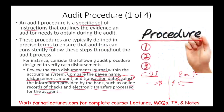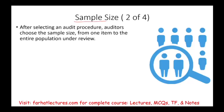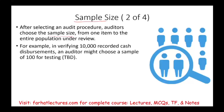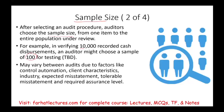The second decision is sample size — how many items to select. After choosing the audit procedures, we choose the sample size. We could choose one item or audit the entire population. For example, in verifying 10,000 records, we might select 100 to test. The sample size may vary due to factors like control automation, client characteristics, whether it's a risky client, the industry, expected errors, and the required level of assurance. We select n — in this example, n equals 100.